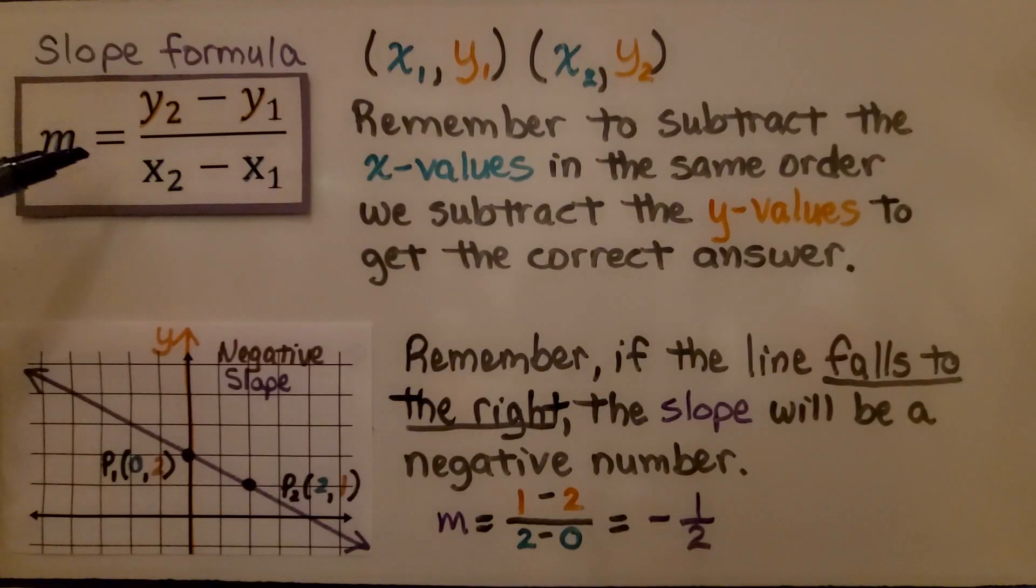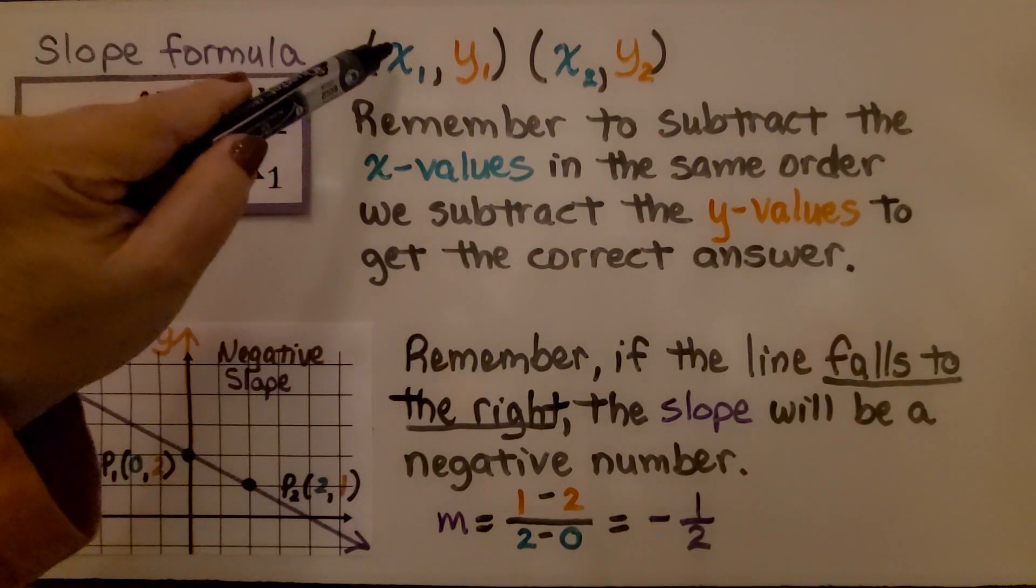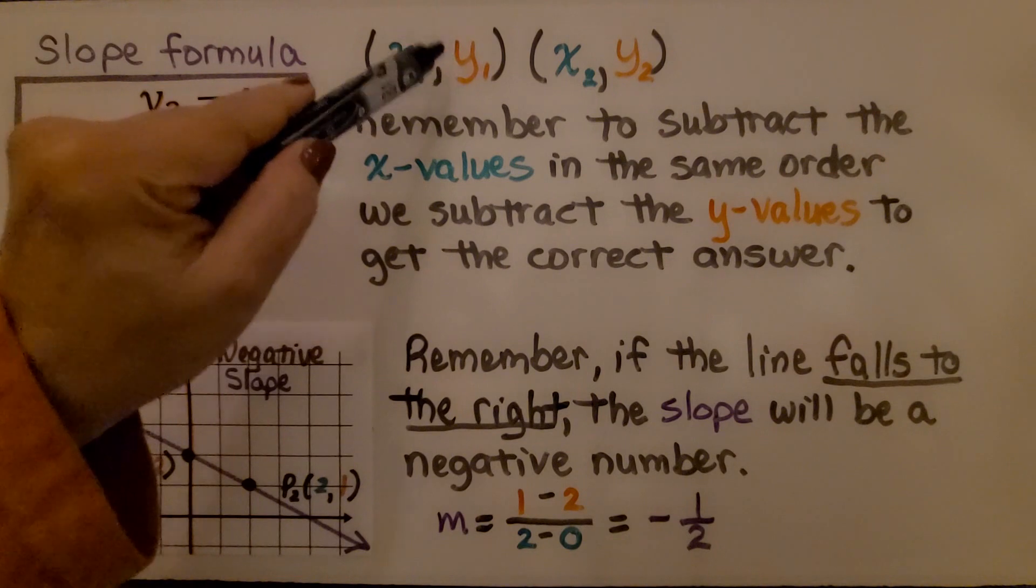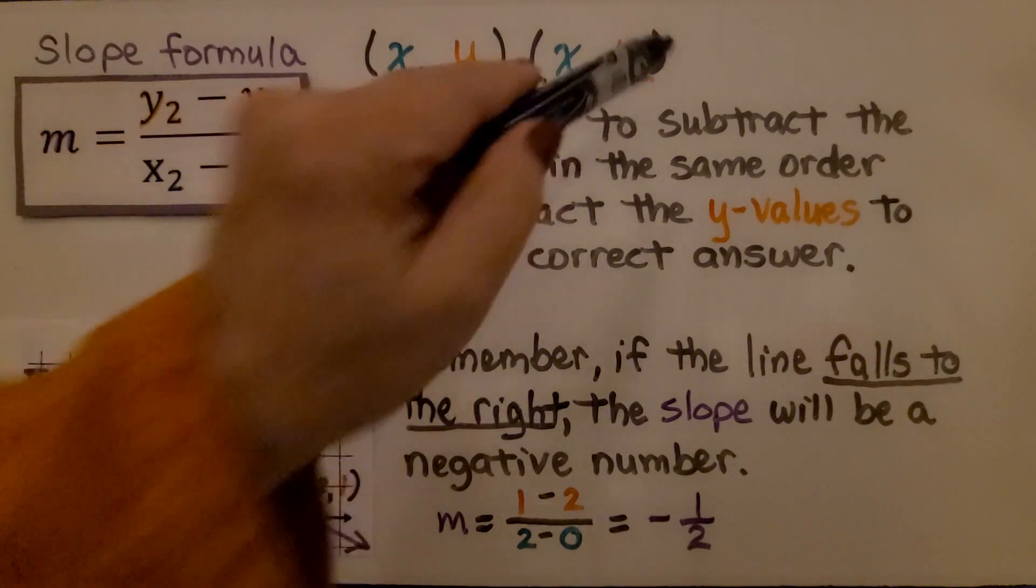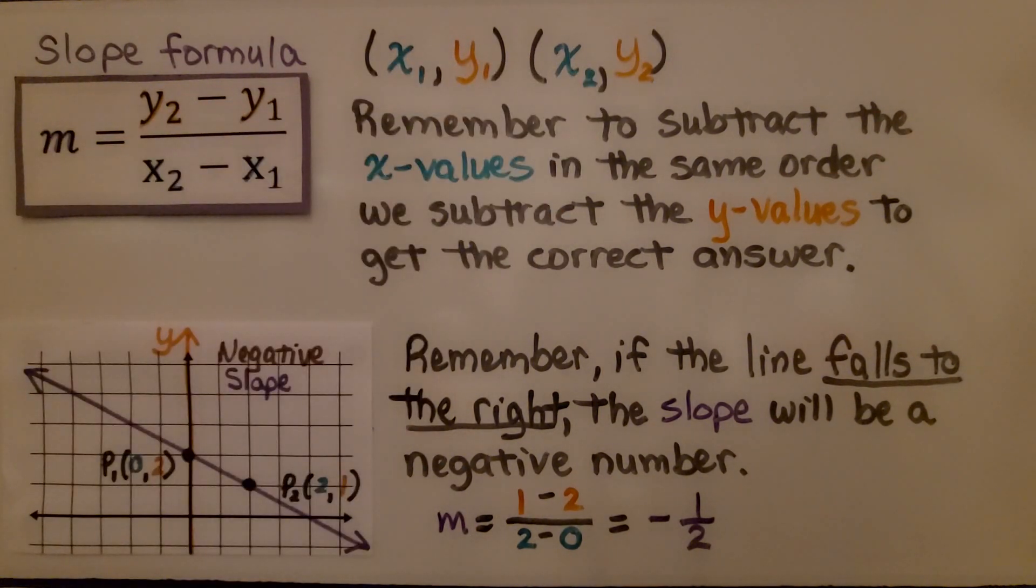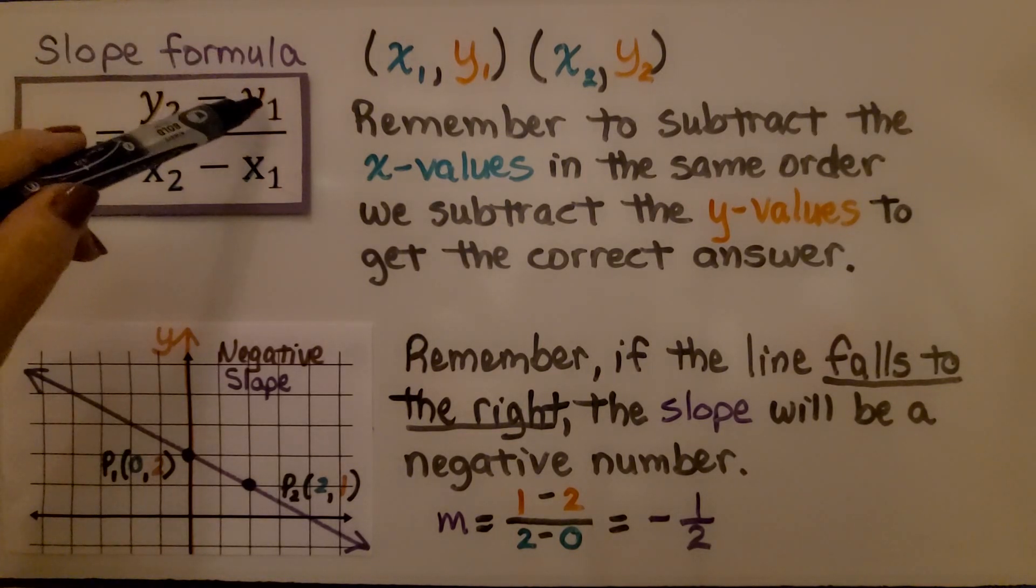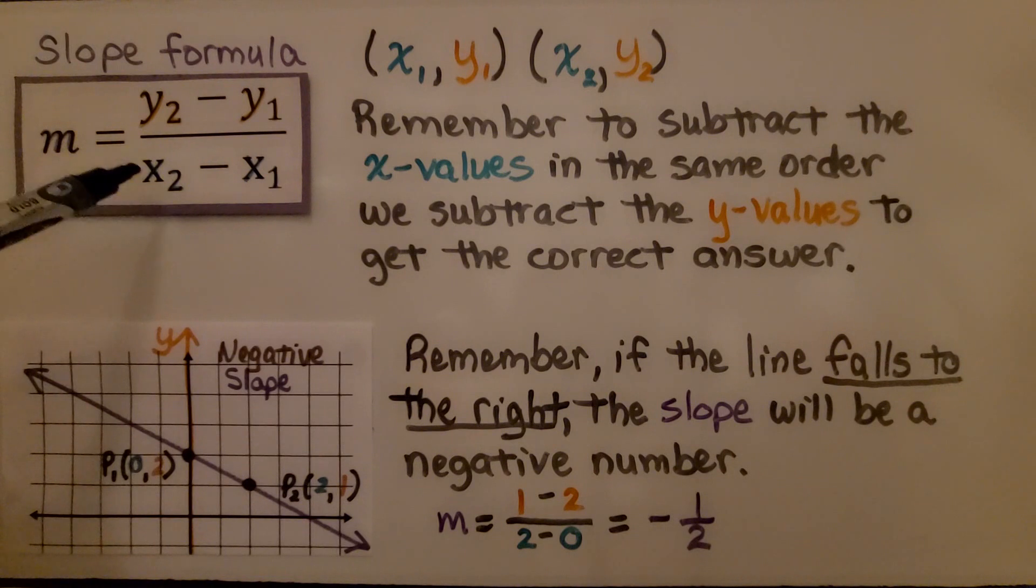Here we've got the slope formula. We have the first x value and the first y value, the second x value and the second y value of ordered pairs. Remember to subtract the x values in the same order we subtract the y values to get the correct answer. If we're starting with the second y value and subtracting the first one, we can't start with the first x value. If we start with the second one, we've got to start with the second x value.